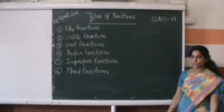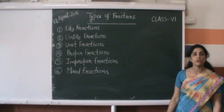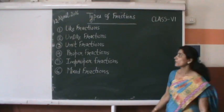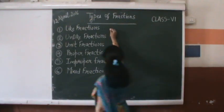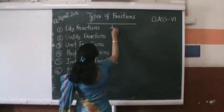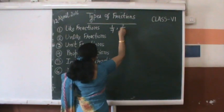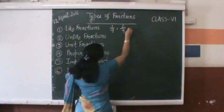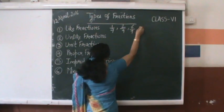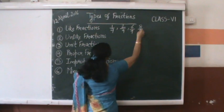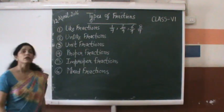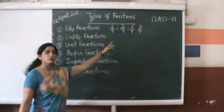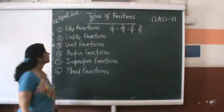Like fractions. Fractions with the same denominator are called like fractions. For example, 1 by 9, 2 by 9, 6 by 9, and 8 by 9 are all called like fractions, wherein the denominators are the same.